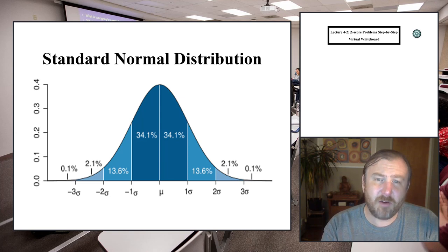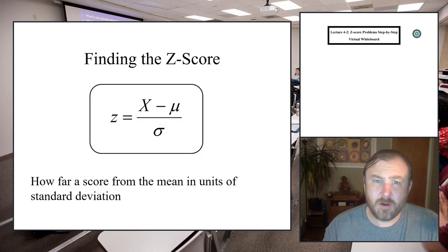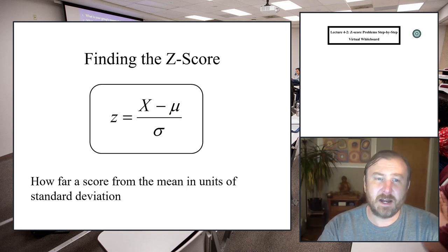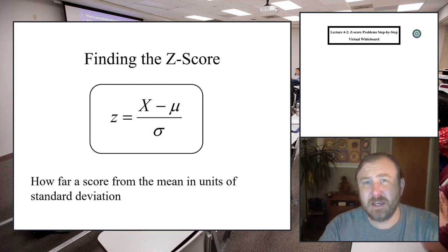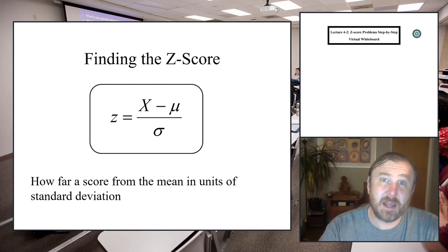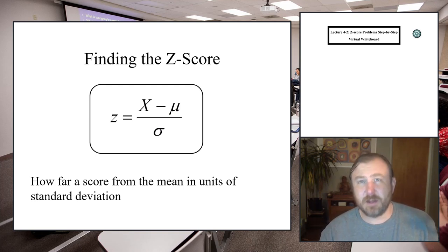What we're going to do now is take some data and standardize it and see what we can do with it. When we standardize our raw data, we take any of those scores and compute its deviation from the population mean, then divide by the standard deviation. Essentially, this measures how far a score is from the population mean in units of standard deviation.